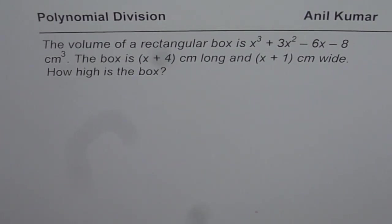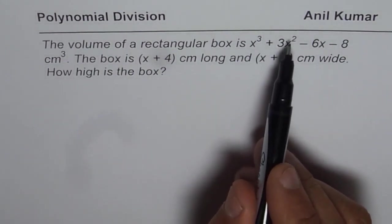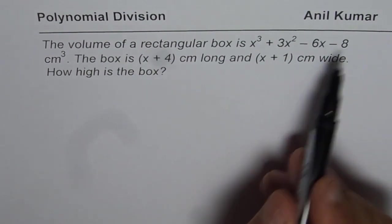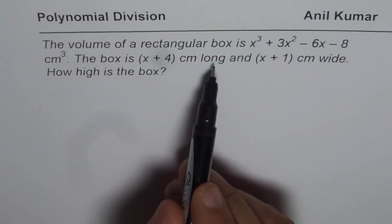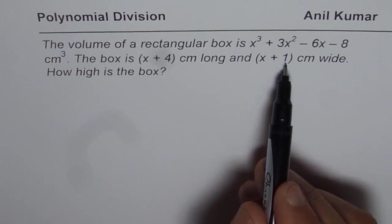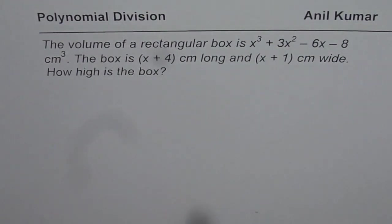Here is copy of my question. It says, the volume of a rectangular box is x³ + 3x² - 6x - 8 cm³. The box is (x+4) cm long and (x+1) cm wide. How high is the box?